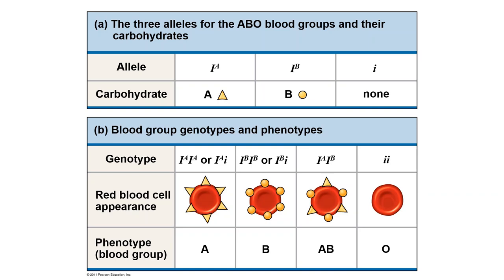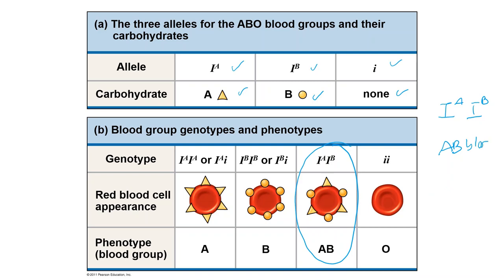This table shows the alleles and the antigens that are present. IA and IB are co-dominant to each other, so whenever both IA and IB are present, both antigens are expressed, contributing to the AB blood group.